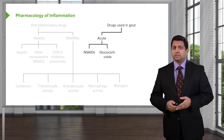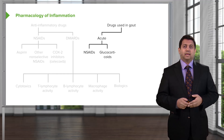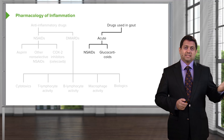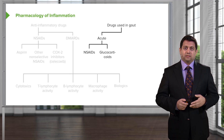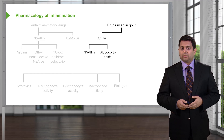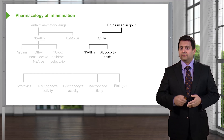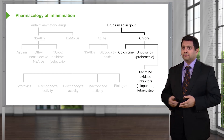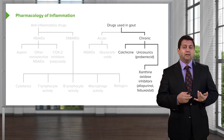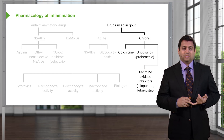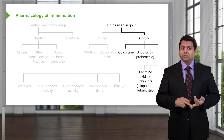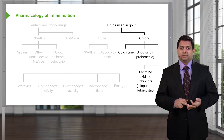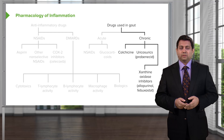We also have drugs used in gout. For acute gout, we use NSAIDs and glucocorticoids, which were covered in previous lectures. For chronic treatment of gout, we use colchicine — remember that drug shows up again — as well as uricosurics and xanthine oxidase inhibitors. We'll talk about those more later.